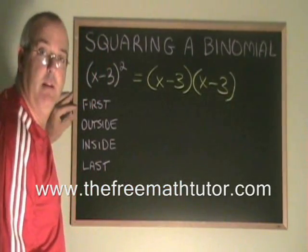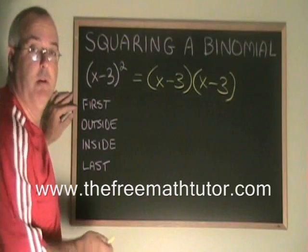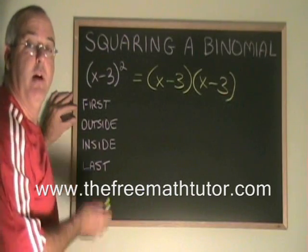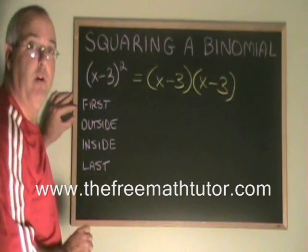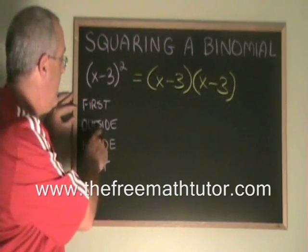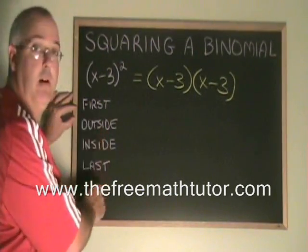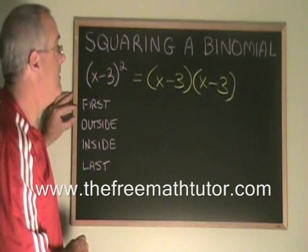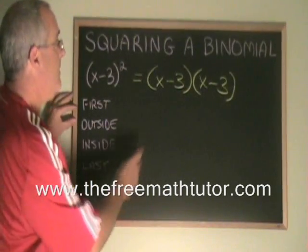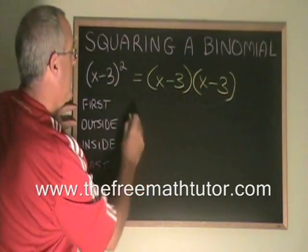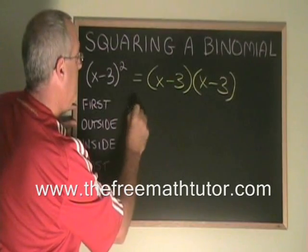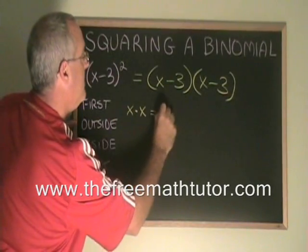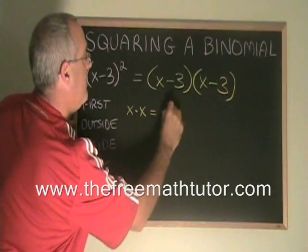At this point, we are just multiplying two binomials. We can use the FOIL method — first, outside, inside, last — to simplify this. The first terms are the x and the x. x times x is x squared.